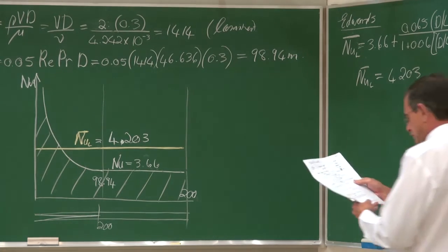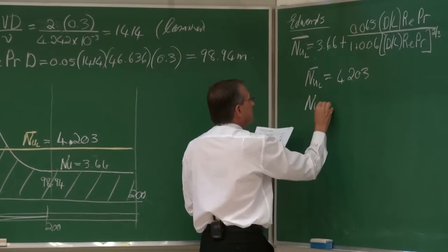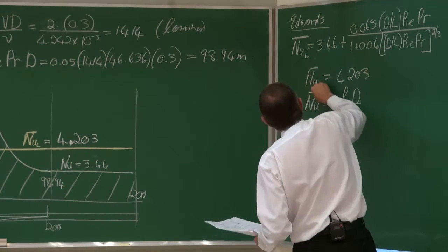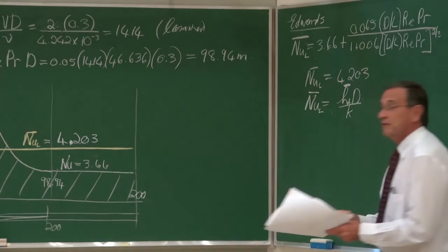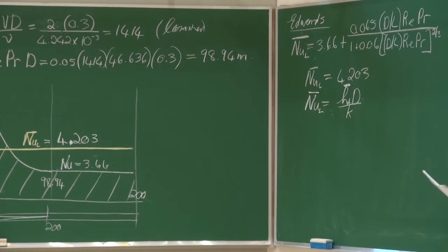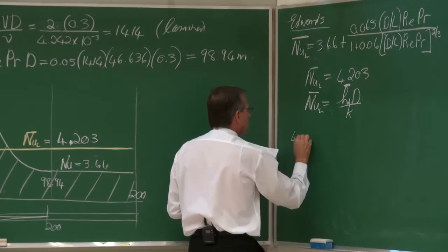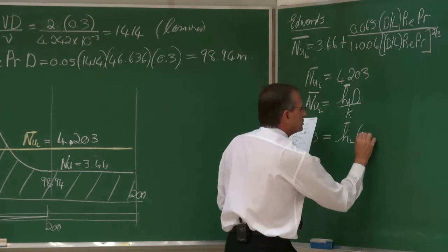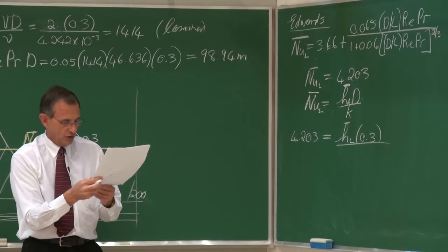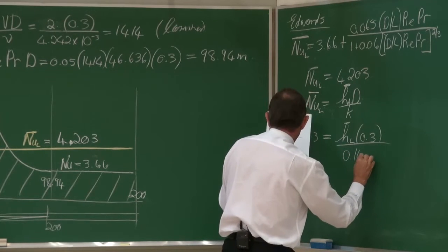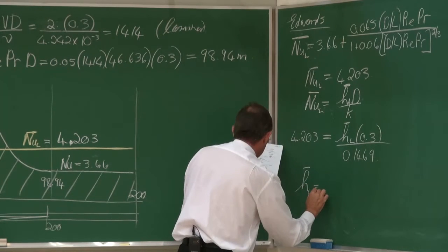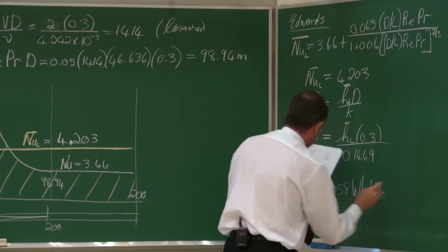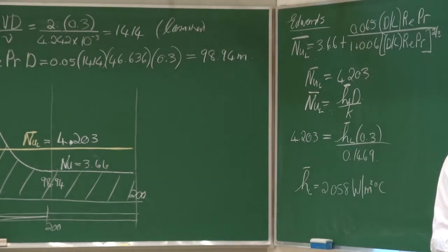From the Nusselt number we can find the average heat transfer coefficient: Nu = h·D/k, so 4.203 = h × 0.3 / 0.1469, giving an average heat transfer coefficient h = 2.058 W/m²·°C. Not a very high value.